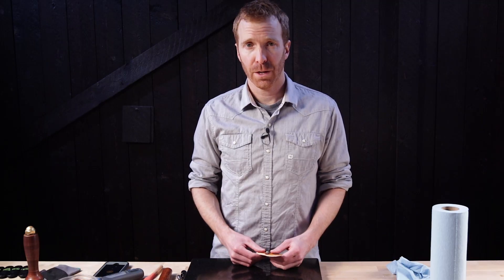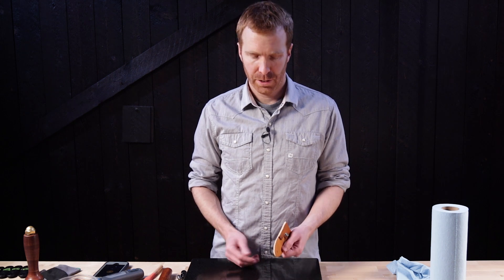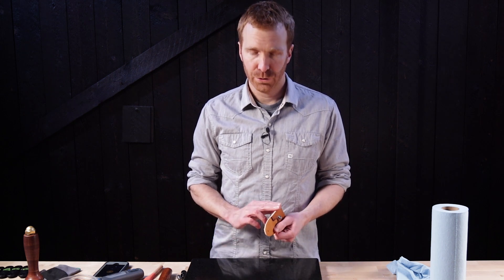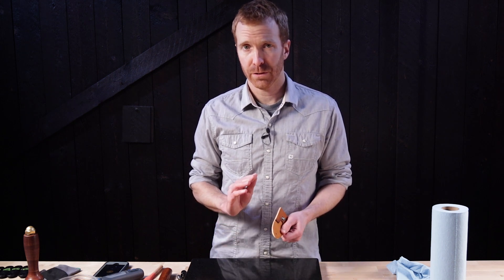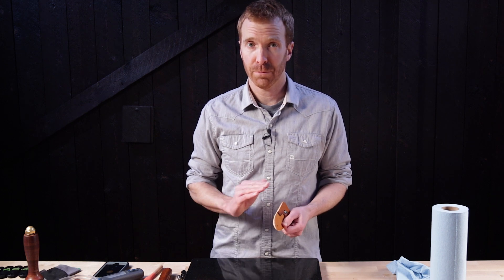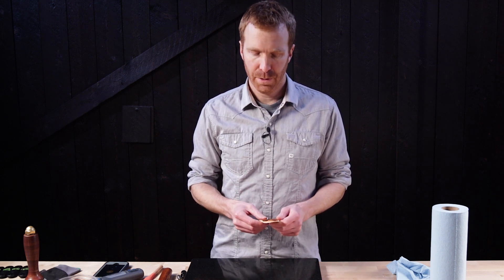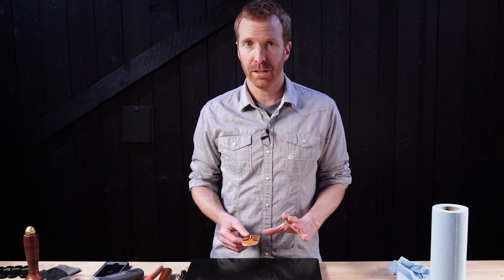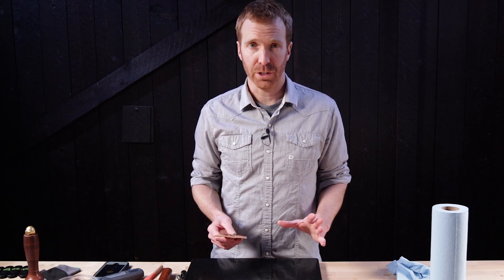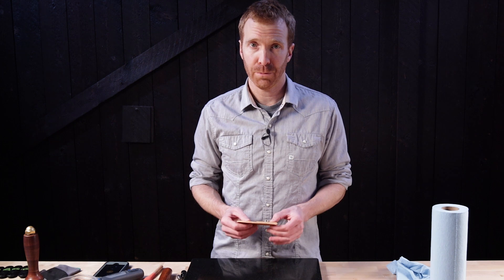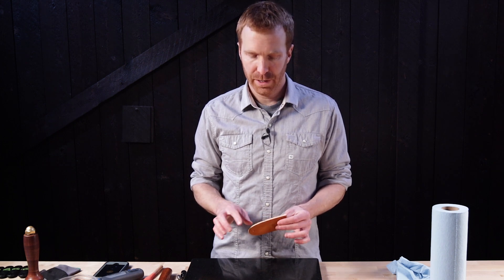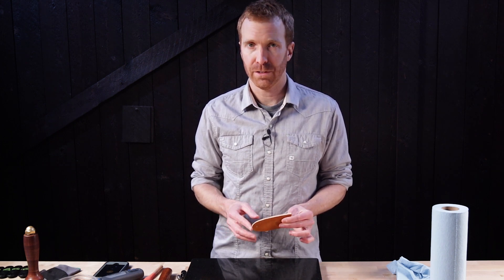All right now that we have this all glued up we need to sand the edges flush. In the past I would have used different grits of sandpaper meticulously over the edge. I've since invested in a small sanding machine so I highly suggest if you have a belt sander use that. It'll make really quick work of this and it creates a nice perfectly even edge.